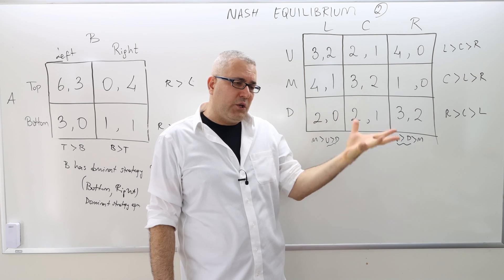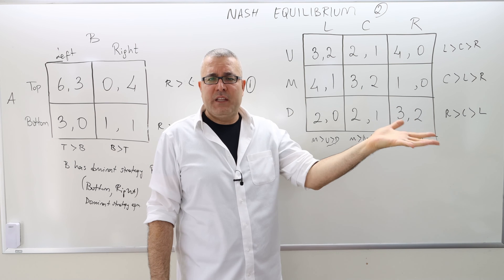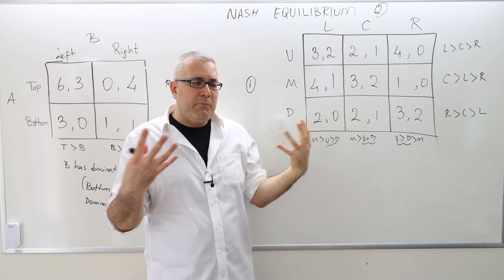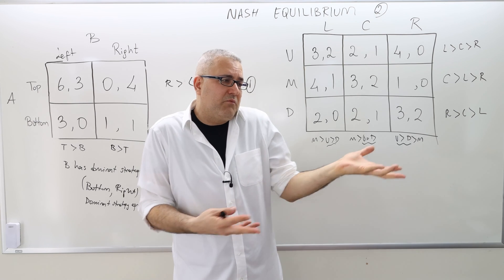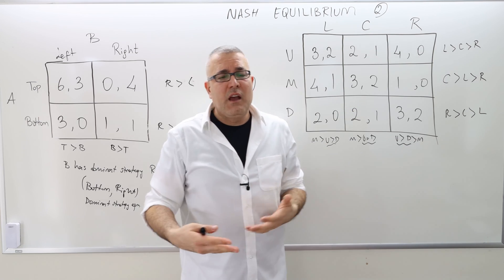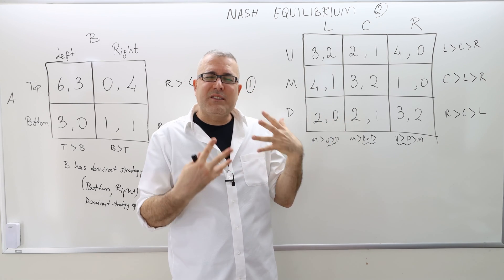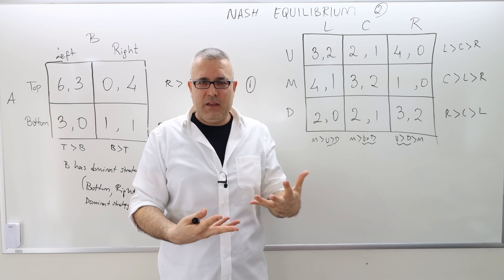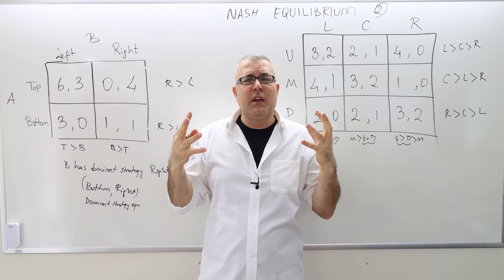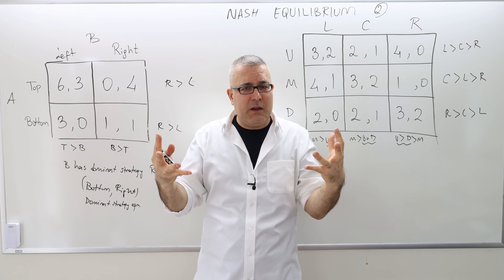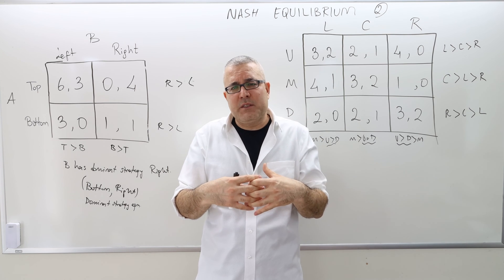If anybody is regretting his or her choice, that shouldn't be the outcome of this game. The outcome should be such that no player is regretting his or her choice. You can think of this as: we play this game with different players over and over again throughout our lifetime. Once I choose something today and I regret, tomorrow when I play this game I will never choose that strategy. But if we both play our strategies in such a way that we don't regret, it's stable — neither player has an incentive to change in the next play. So this is sort of a focal point.